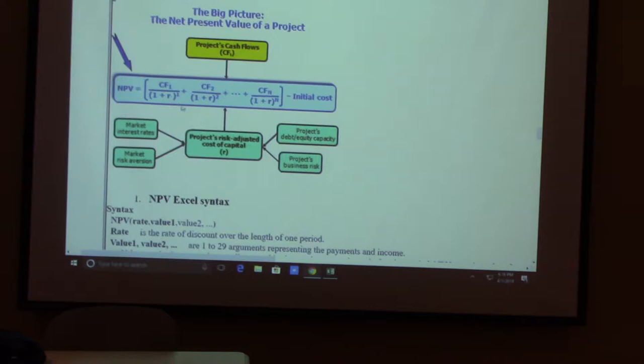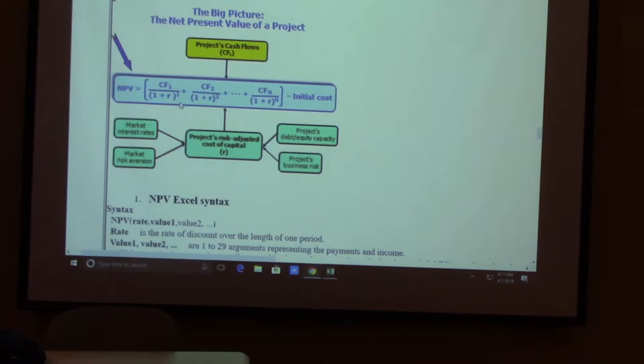If you discount the money you're getting in the future by the borrowing cost, that tells you how much your new investment is worth — how much you can make from your new project. You know how much the project earns and how much it costs to raise the capital. The NPV, net present value, will be the worth of your project.